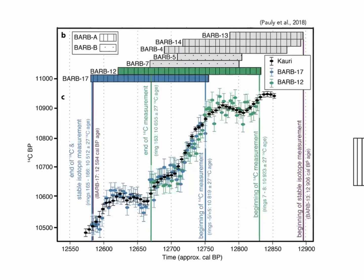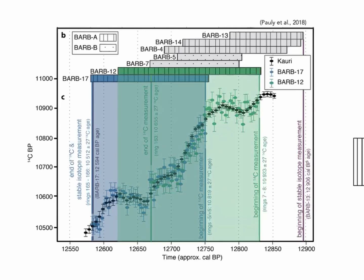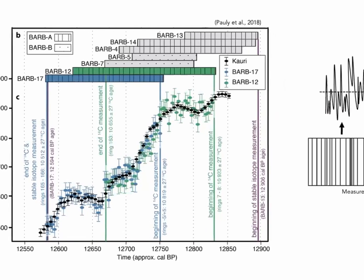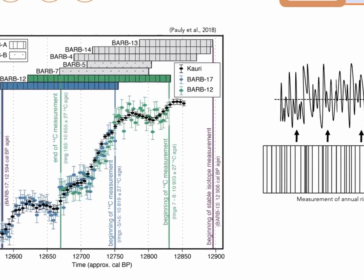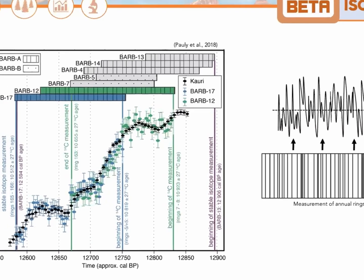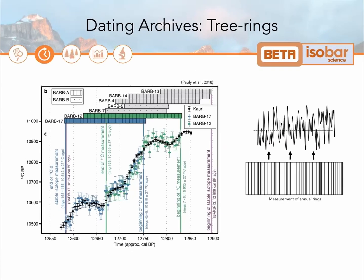In the plot you can see a radiocarbon calibration record in black, which was developed from New Zealand. And two trees, barb 17 and barb 12, were analyzed to place the tree ring record on this calendar time. You can see that by analyzing the rings at high resolution, a very strong fit between the tree growth 14C age and this New Zealand kauri calibration can be made.